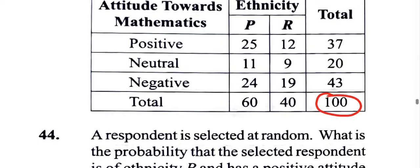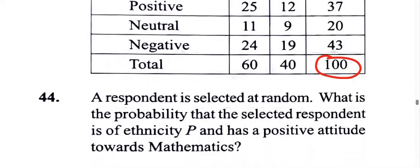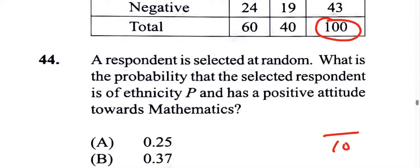Basically it's going to be out of a hundred persons. That's first off, right? So out of the hundred persons, they want to find out what's the probability of selecting a person or respondent who is of ethnic group P and that person have a positive attitude towards math.